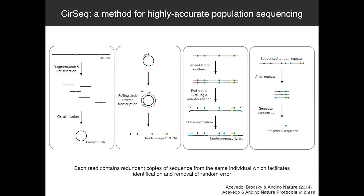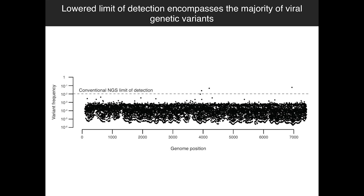I want to translate this into what we're able to see with a real population. I don't have time to get into the validation and the statistics of how we define our new error rate and detection limit, but I'll just tell you that we're able to drop the detection limit four orders of magnitude, so that we can see errors that are approximately one in a million in the population. By dropping the limit of detection four orders of magnitude, we can now see virtually all the mutations present in the virus population.